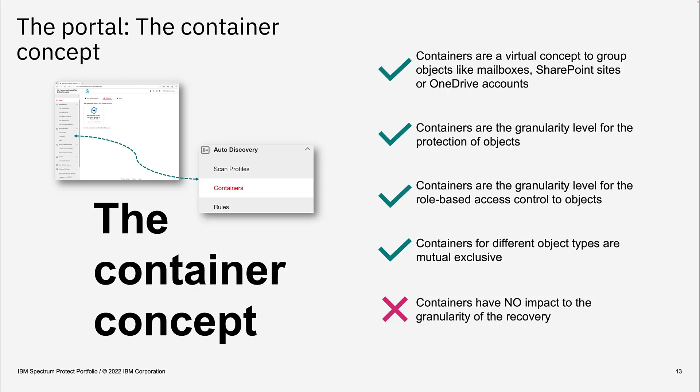The different object types are mutually exclusive for containers — you cannot create a single container that contains both a mailbox and a SharePoint site. A container includes mailboxes or SharePoint sites, but not both. Furthermore, the container is just a virtual concept to group data for access rights and backup. The container concept has no impact on recovery granularity — even if mailboxes are grouped in a container, they can still be restored standalone or at a lower level, such as a single directory or even a single mail.